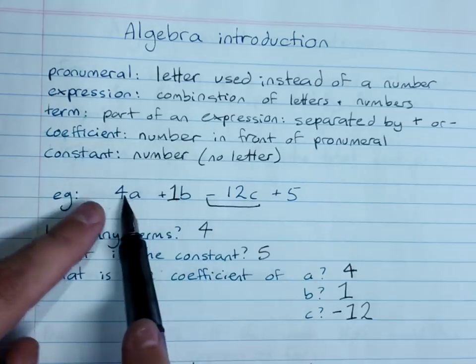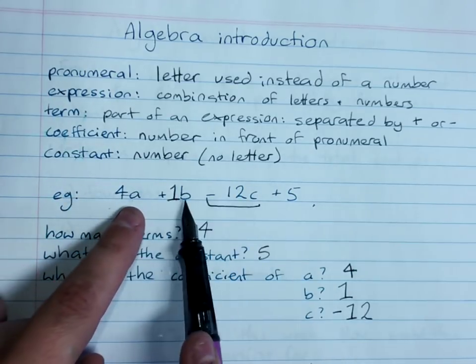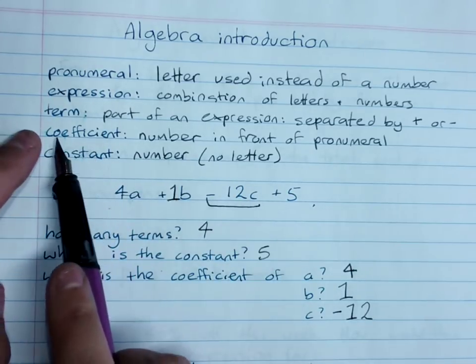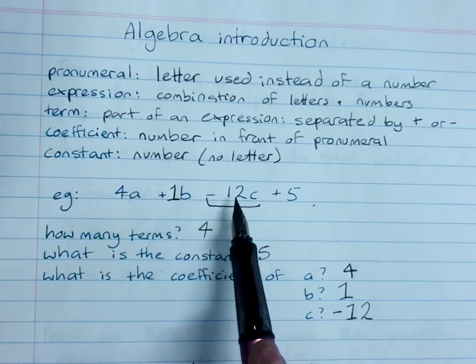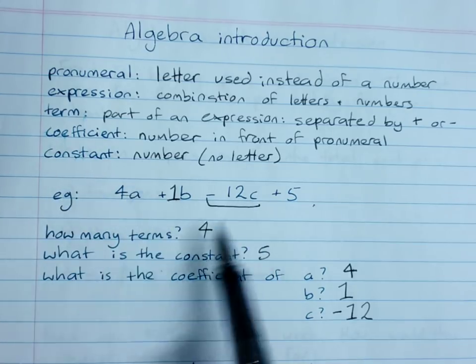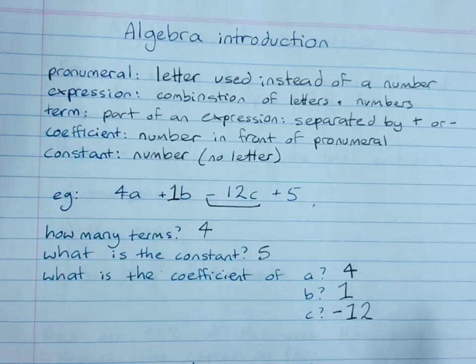So here is an expression. The pronumerals are the letters. Coefficients are numbers in front of letters. Constant is a number added or subtracted on its own.